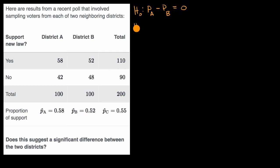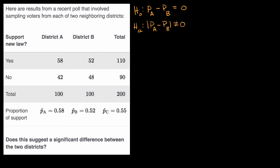Our alternative hypothesis is that the absolute difference between the proportions is not equal to zero. If we were doing a full hypothesis test, we would set a significance level, which we usually denote with alpha. It might be a 10% or 5% significance level — let's say we set it at 5%.